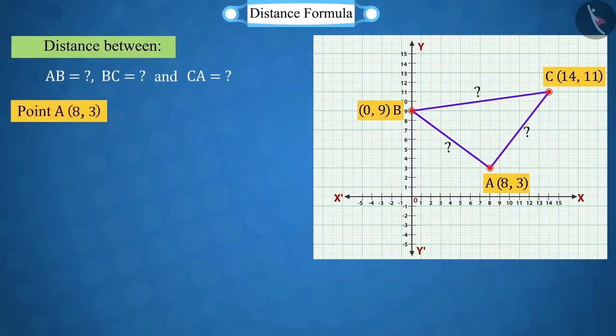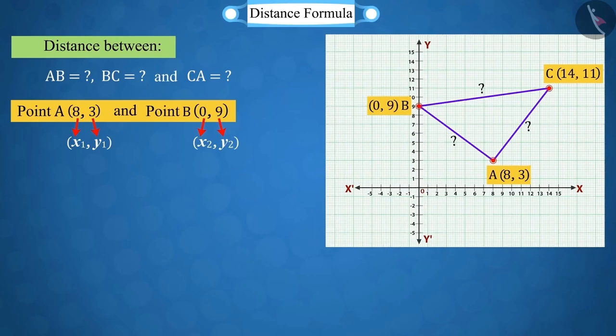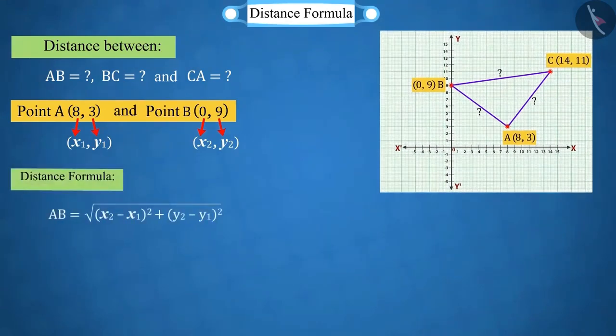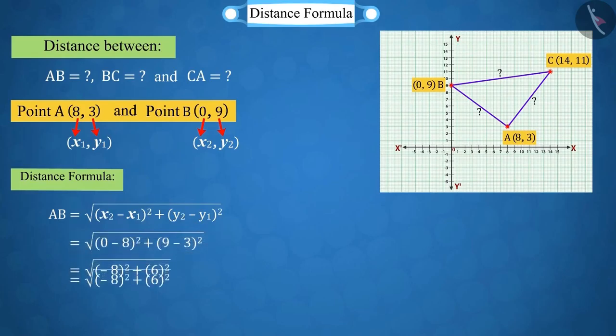Suppose the coordinates of point A, that is x1, is equal to 8 and y1 is equal to 3. And the coordinates of point B are x2 equal to 0 and y2 equal to 9. According to the distance formula, we get the value of AB as 10.